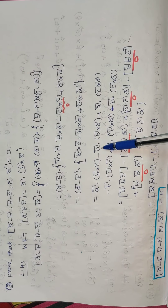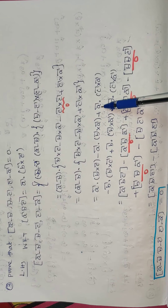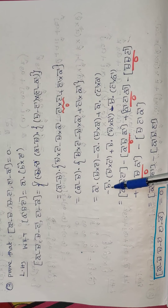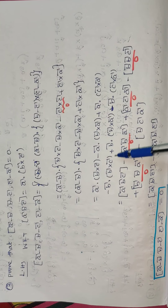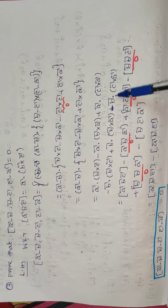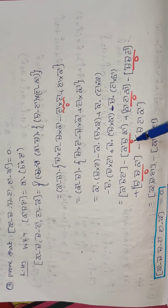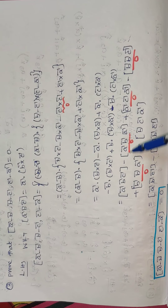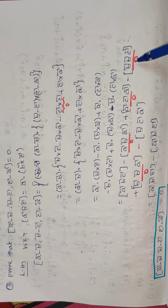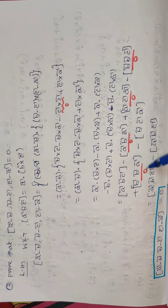Now, a dot (b cross c) equals box [a,b,c]. So we get: box[a,b,c] minus box[a,b,c], minus box[a,b,a], plus box[a,c,a], minus box[b,b,c], plus box[b,b,a], minus box[b,c,a]. Any box product with a repeated vector equals zero, so box[a,b,a], box[a,c,a], box[b,b,c], and box[b,b,a] all equal zero.